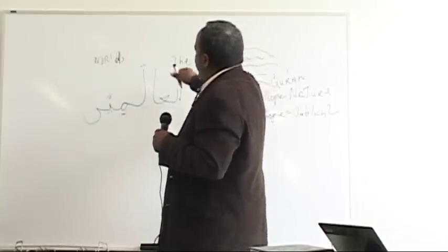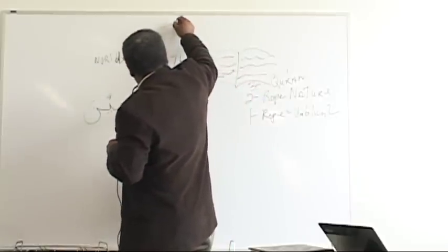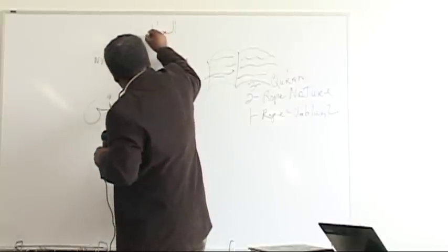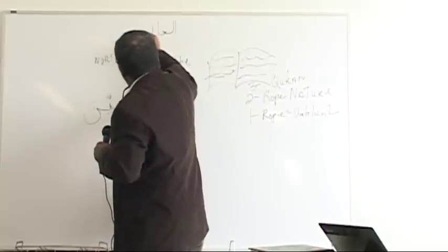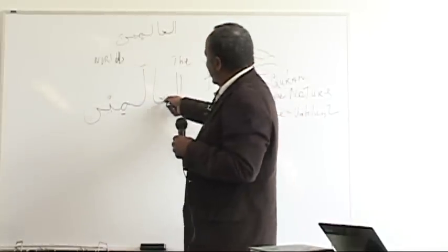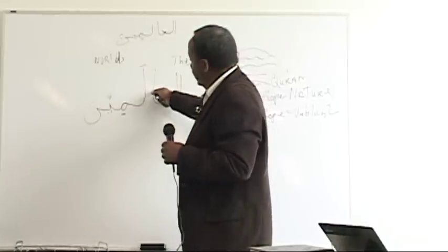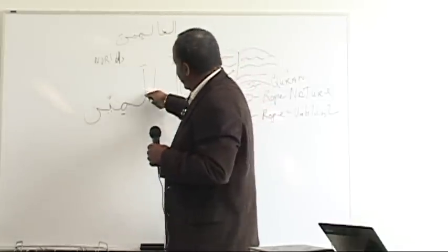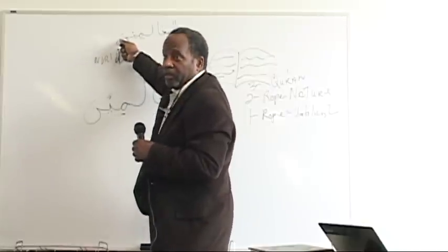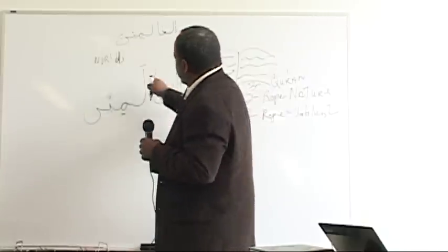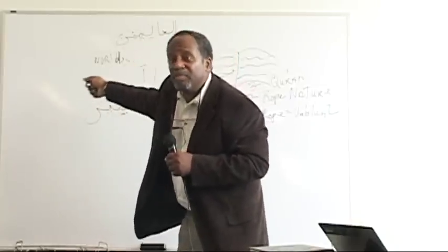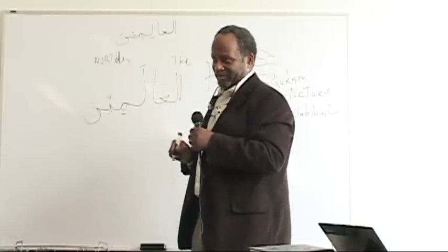You have another term that you'll say like this here. Same thing, el, alif, lam, meem, ya with sukun, noon with A. Everything is the same. Guess what the difference is? One little dot. El alimine. This means the worlds. This means the scholars. This is el alameen, this is el alimeen.